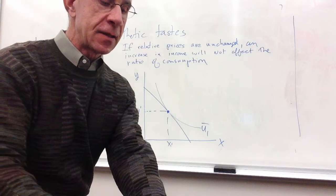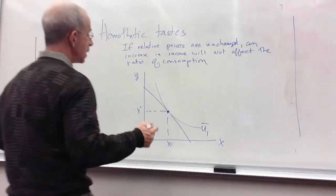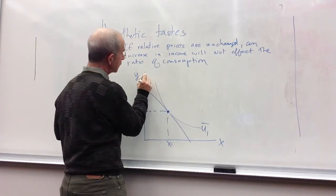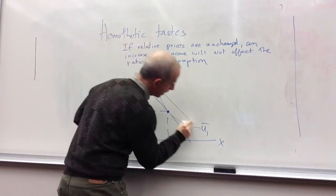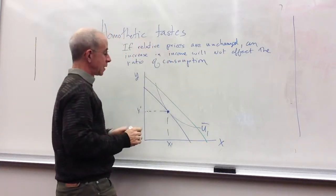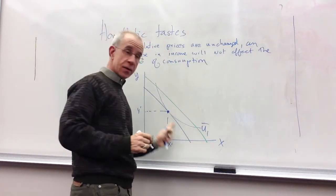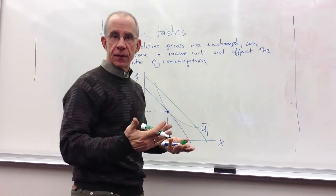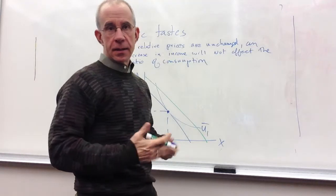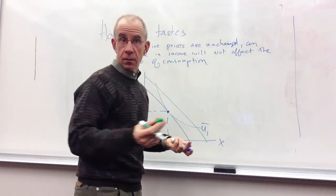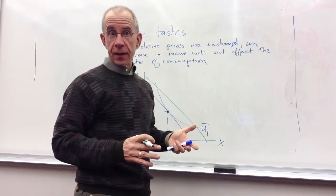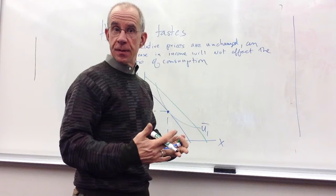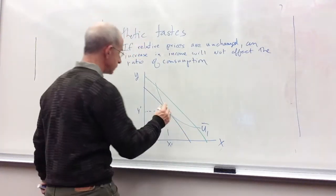So let's imagine that something has increased income but prices have not changed. So we've got a new income level. So the slope of that green line is equal to the slope of the blue line. So there's no change there. So we know generally if income goes up, that consumers are going to buy more of something.